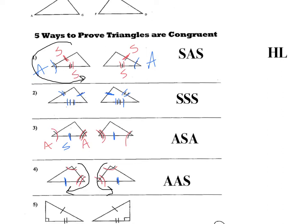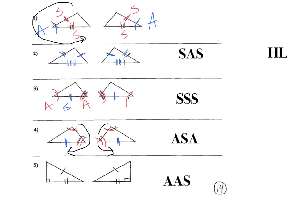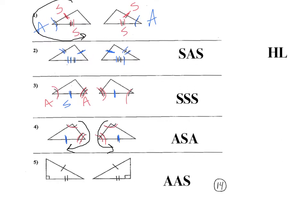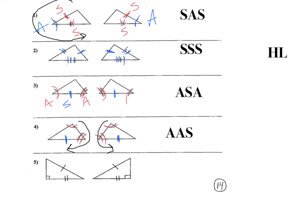The last example is only when we have right triangles — and clearly we do. The hypotenuse is congruent to the hypotenuse, and the leg is congruent to the leg. So we're going to use hypotenuse leg in that case.